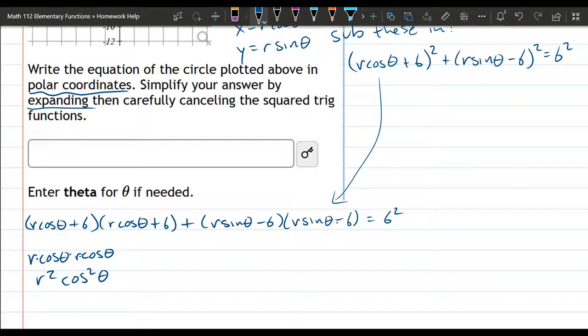Now the outside inside, so we have 6 r cos theta plus 6 r cos theta, and those are the same, so we can add them together. 6 and 6 is 12. So we can just write this as 12 r cos theta. 6 and 6 is 6 squared, that's the last.